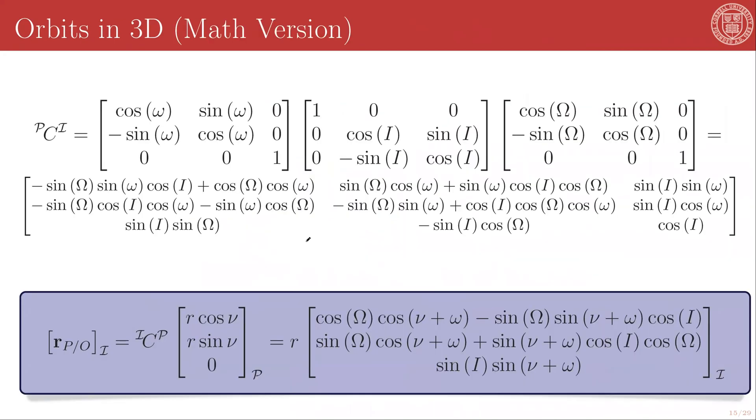The mathematical version of these statements is a set of matrix multiplications. You will recall that for subsequent rotations, we left multiply by each subsequent direction cosine matrix. So we start with a capital omega rotation about the third direction, represented by this matrix, and then perform an I rotation about the first unit direction, represented by this matrix. And finally, a lowercase omega rotation about the new third unit direction, which is this matrix.